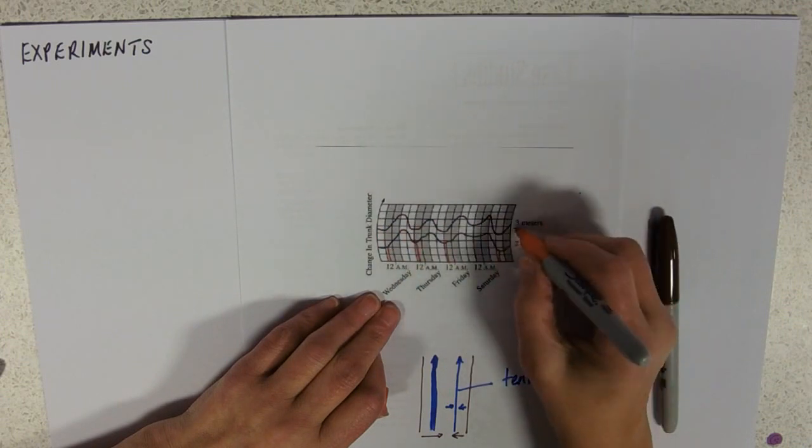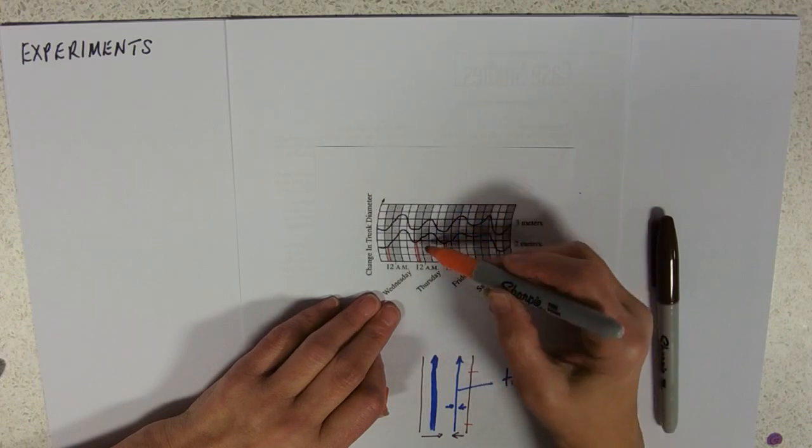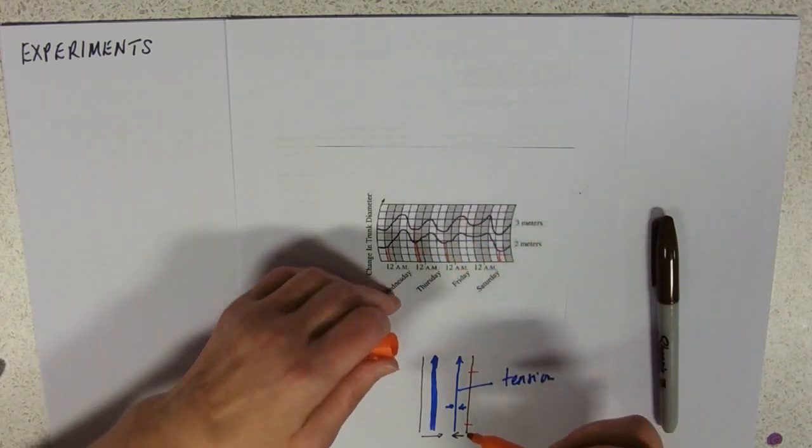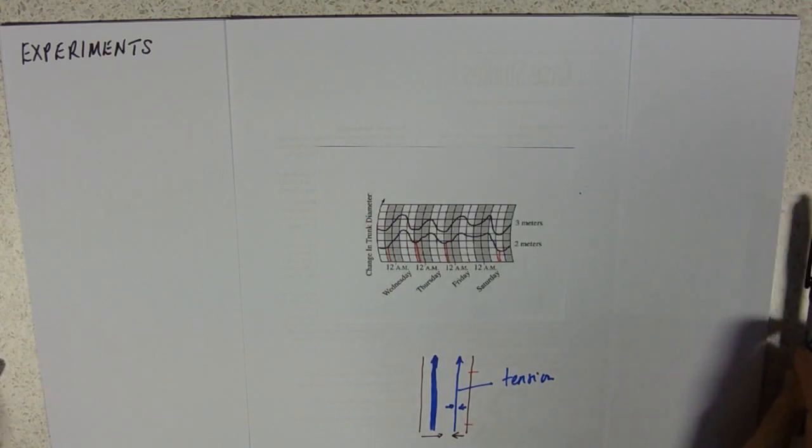And so, these are just sort of it's been measured there and there, 2 metres and 3 metres. And so, there's our tree trunk getting narrower at sort of 12 noon when the conditions are absolutely ripe for transpiration.